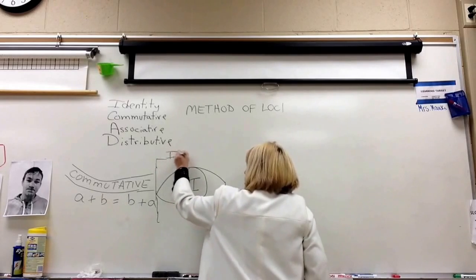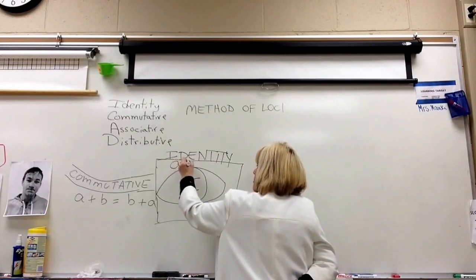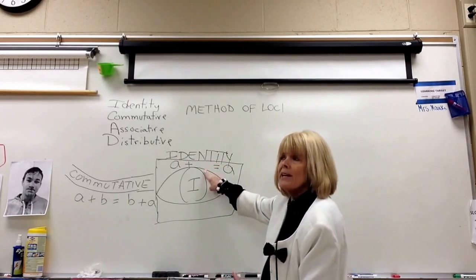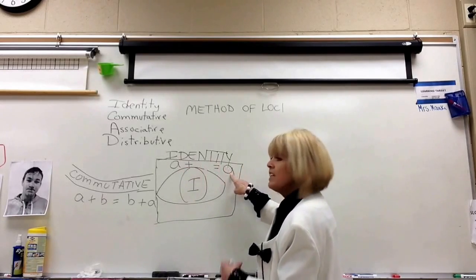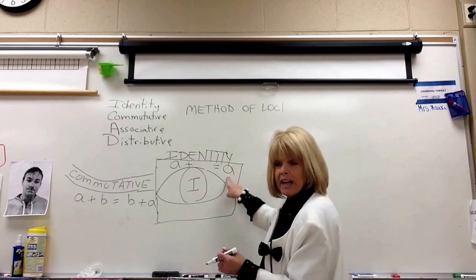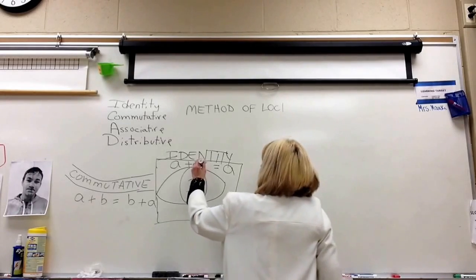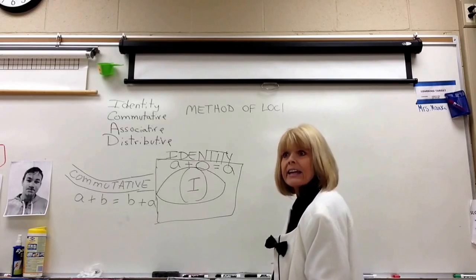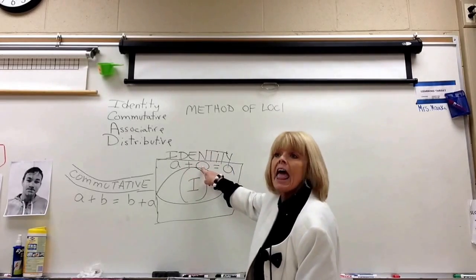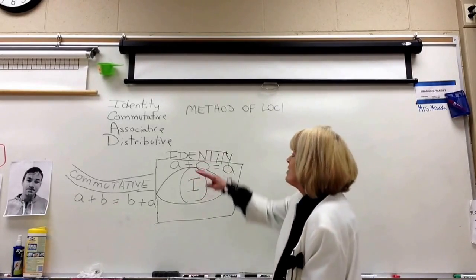We're going to write the identity property right here: A plus blank equals A. What could you add to A that would keep its same identity — that wouldn't change it? A zero. If you add nothing to it, then it's still A. It keeps its same identity. That's called the identity property of addition, and that zero is called the identity element.